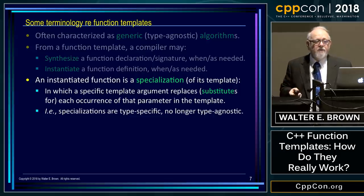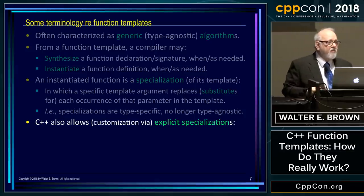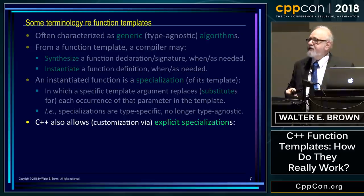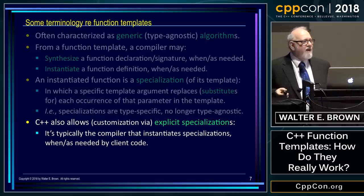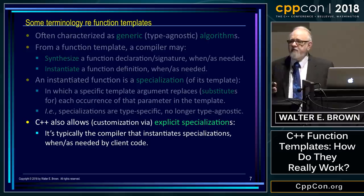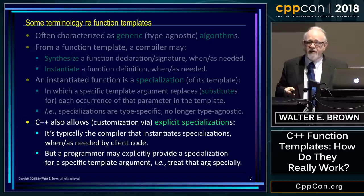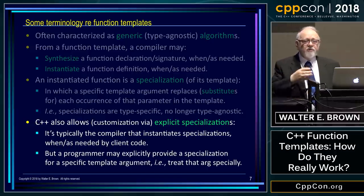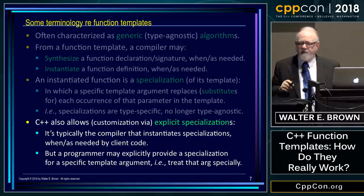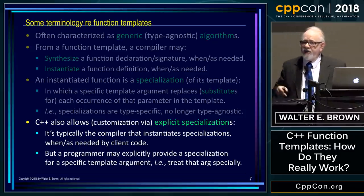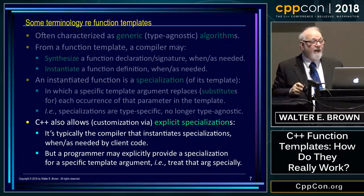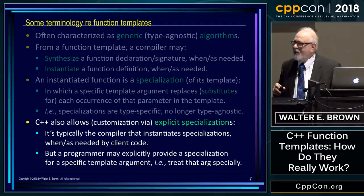C++ also allows explicit specializations. Usually it's the compiler that instantiates specializations, but the language does permit programmers to provide their own specializations as a form of customization — here's the general-purpose algorithm, but for this specific type I'd like it handled differently. Explicit specializations are thought of typically as a form of customization of the generic template. However, we're going to recommend that you not do that — but we're not ready to say why not just yet.